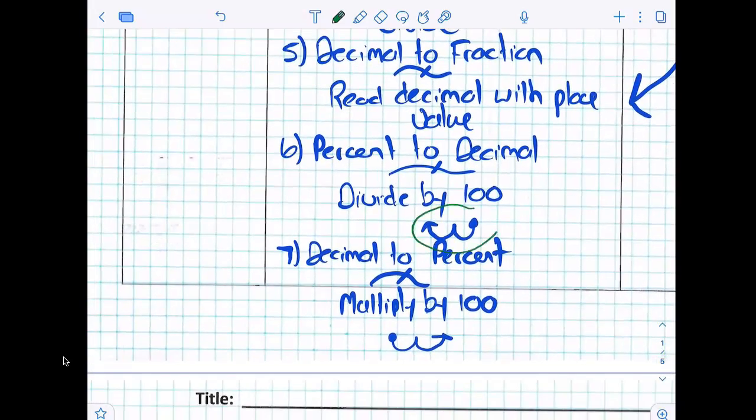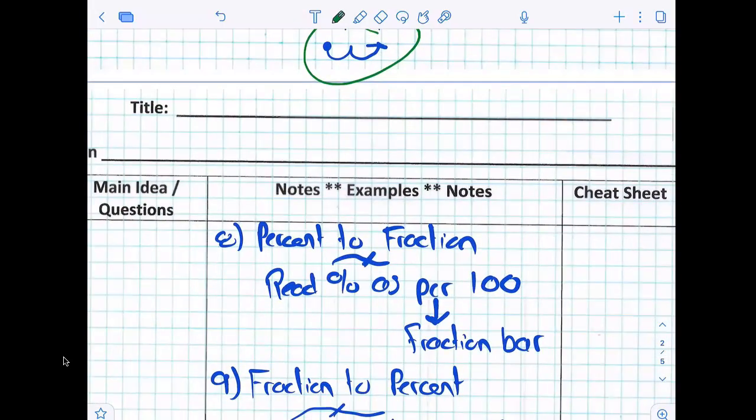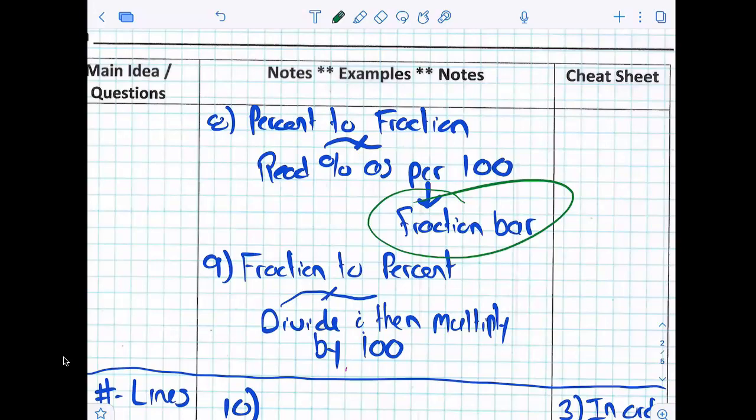Notice how I have these little buddy hops, right? Okay. How do you go from a percent to a fraction? Read the decimal with place value! What does the word per mean? Per 100! And a fraction to a percent, there's two steps. Step one is? Divide! Step two is? Then multiply by 100!